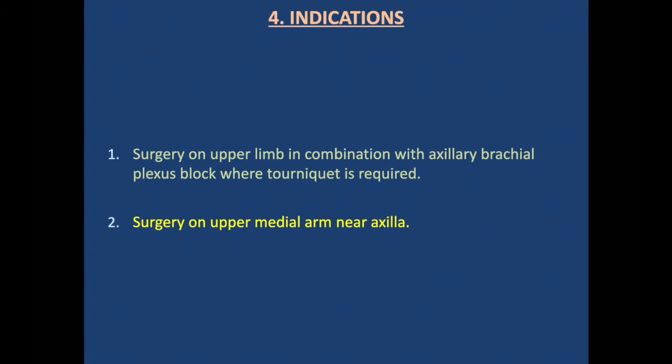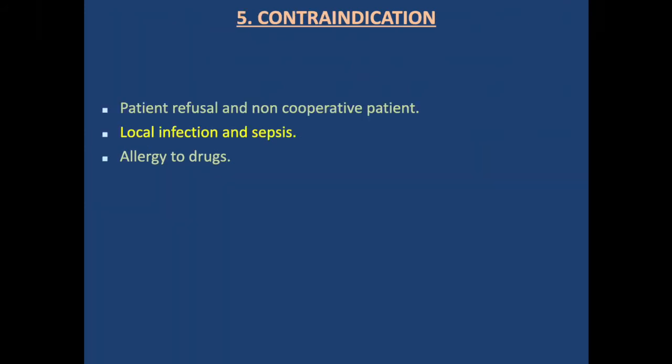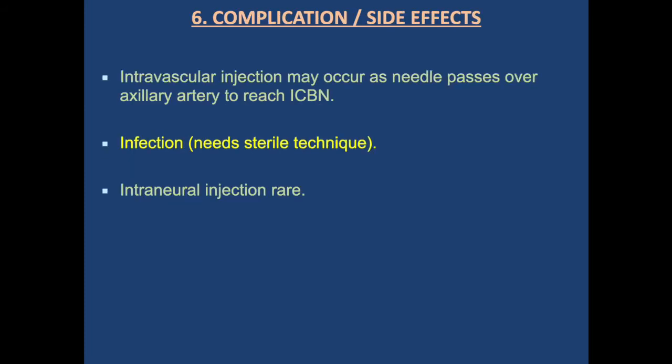Indications: there are two indications for the intercostal brachial nerve block. First, when a tourniquet is applied for any procedure on the upper limb. Second, surgery on the upper medial arm near the axilla. Contraindications are the same as for other nerve blocks: patient refusal, non-cooperative patient, local infection at the block site (cannot proceed safely), and drug allergy.